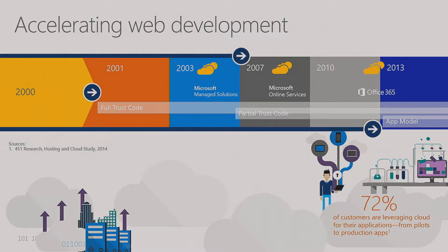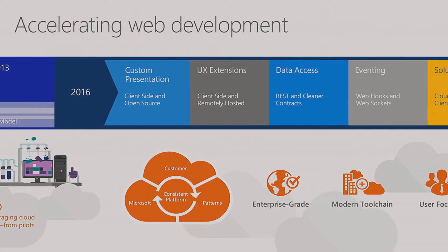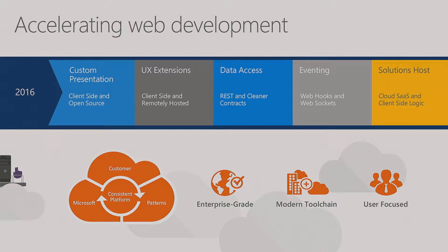Throughout cloud development we needed a model that provided patterns and practices similar to that full trust model, so you could bring solutions to the cloud. That's when we introduced partial trust code, or what you may know as sandbox solutions. As JavaScript advanced and distributed computing became possible again, we responded by introducing the app model — the artist formerly known as the app model, now called add-ins — and then the SharePoint framework. It's not a decision we take lightly when we introduce a new extensibility model.